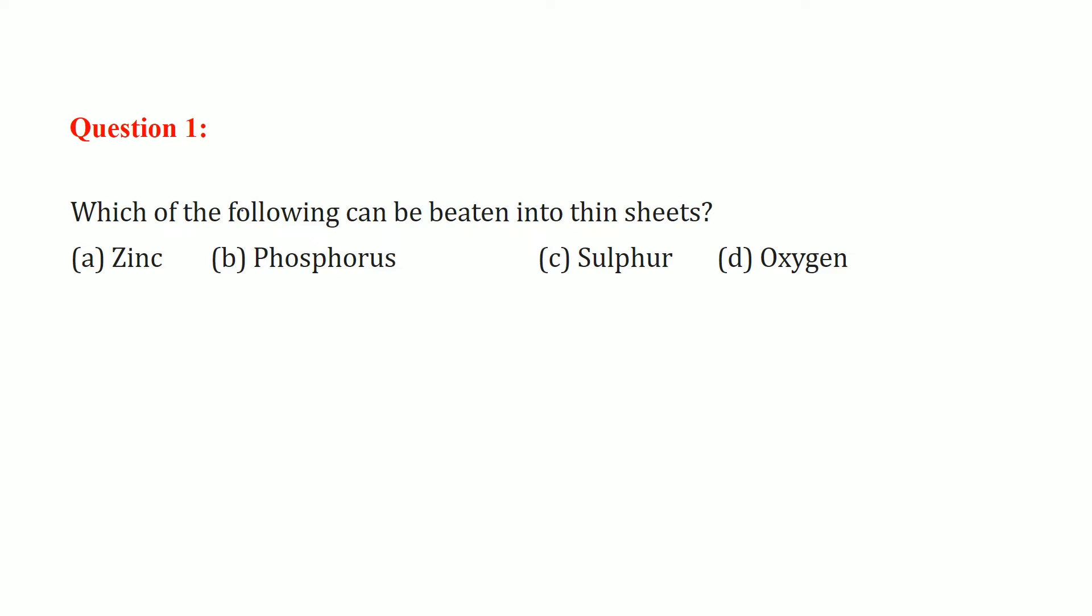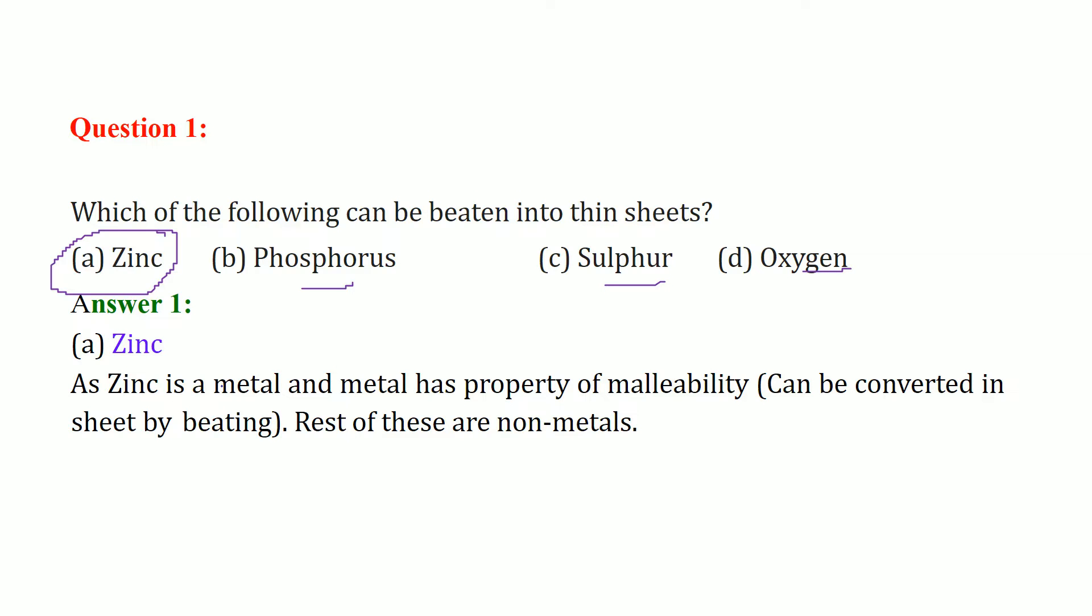The first question is which of the following can be beaten into sheets? The answer would be zinc because this is the only metal, others are all non-metals. Zinc is a metal and it has a property called malleability.